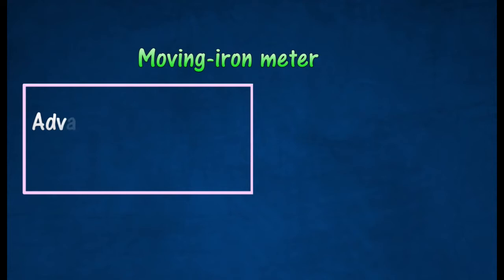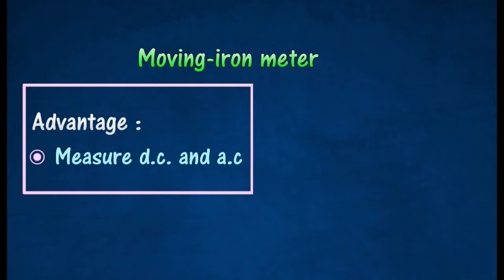The advantage of the moving iron meter is that it can measure both direct current and alternating current.